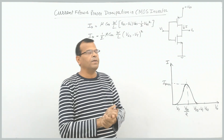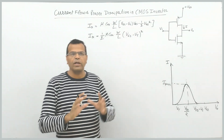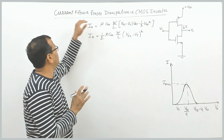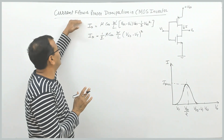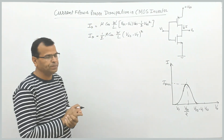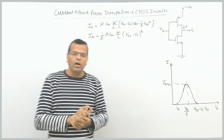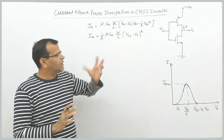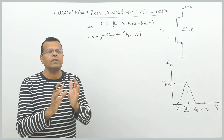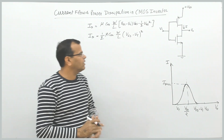Hello everyone. The next topic in CMOS inverter is current flow and power dissipation. Let us see the circuit operation and try to understand the variation in current through the inverter.